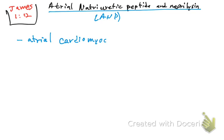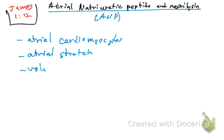This ANP is secreted by the atrial cardiomyocytes in response to atrial stretch. When there is atrial stretch, it is going to release ANP, which is indicative of volume expansion.